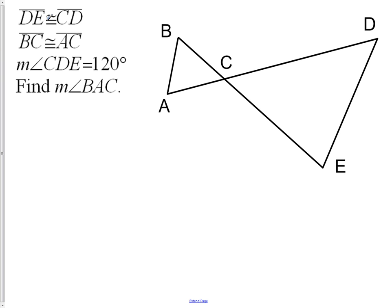We have DE congruent to CD. Immediately, as soon as I see that, I realize I have an isosceles triangle.